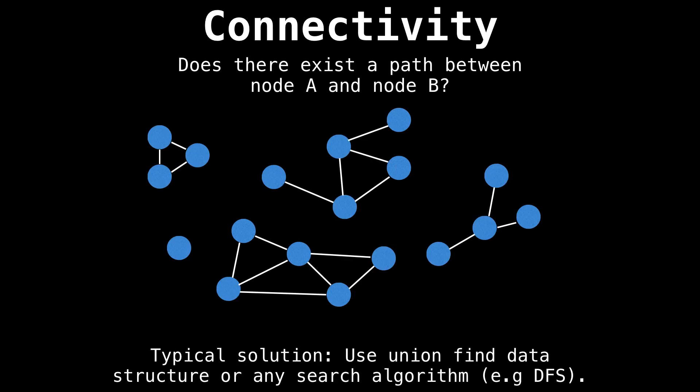As simple as it sounds, connectivity is a big issue in graph theory. The problem can also be simplified to: does there exist a path from node A to node B? In this scenario, we don't care about the minimum cost, we just want to know can one node reach another node.